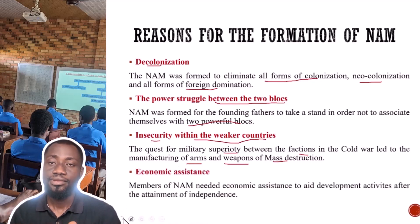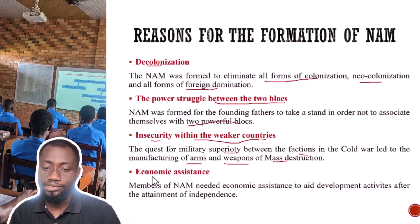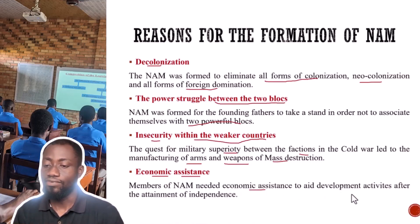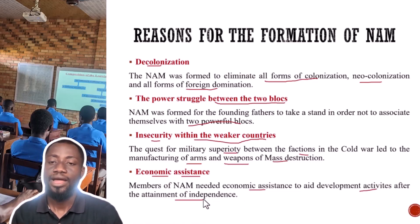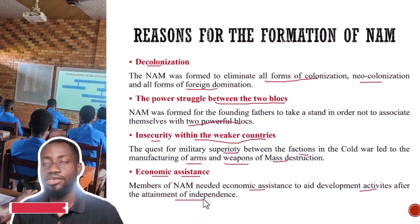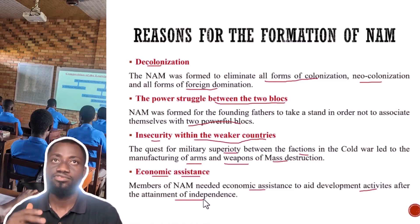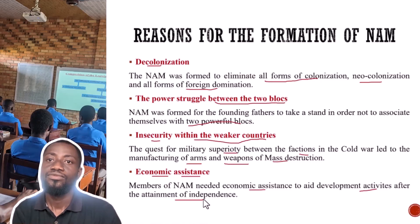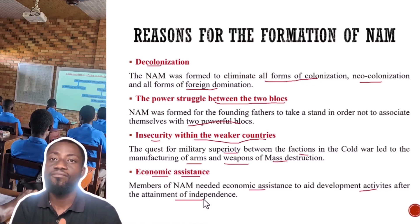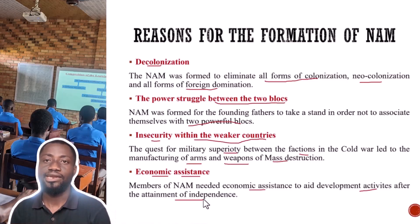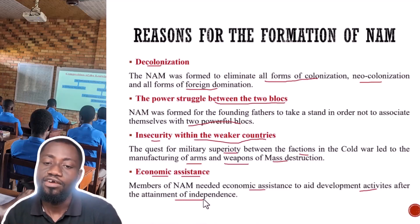Also, economic assistance was one major important reason for the formation of NAM. Members of NAM needed economic assistance to aid development activities after the attainment of independence. These developing countries needed foreign investment and foreign aid. If you align with one bloc and that bloc disappoints you, you can't go to the other bloc. In order to gain economic assistance from both sides, they decided not to align with any of them and made it part of their foreign policy.